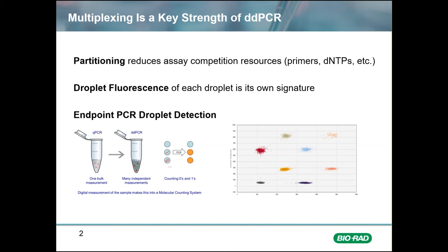Droplet digital PCR has many compelling advantages over other PCR methods, and easy multiplexing is one of these compelling features. Partitioning of the sample creates a unique situation where the assays do not have to compete for PCR resources like bulk solution multiplexing does. The more partitions, the more assays that can be multiplexed.